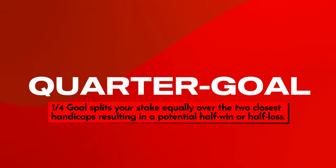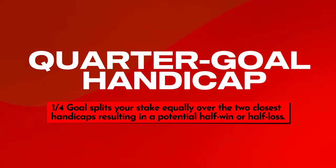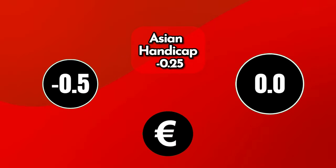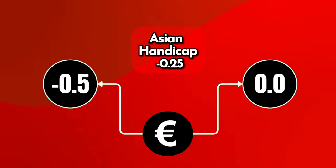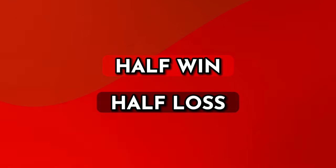0.25 Handicap, quarter goal: quarter goal handicaps can be complicated but are fairly easy to understand once you know how they work. Quarter goal Asian Handicaps involve splitting your stake equally over the two closest handicaps, resulting in a potential half-win or half-loss.